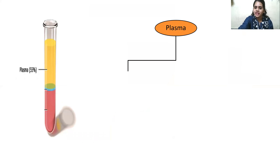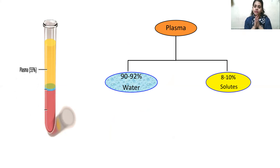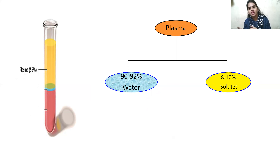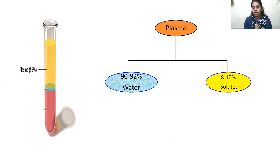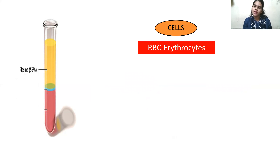Let us understand each component. Plasma constitutes around 90 to 92% water and 8 to 10% solutes. So 90 to 92% water is the main part of plasma, and the remaining 8 to 10% are solutes, which contain gases like nitrogen, oxygen, and carbon dioxide, certain hormones, and nutrients like glucose and amino acids. So plasma is mainly water — 90 to 92%. And blood cells constitute 45% of our blood while plasma constitutes 55%.